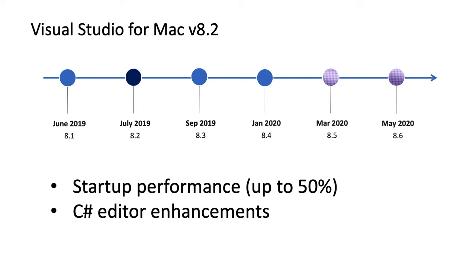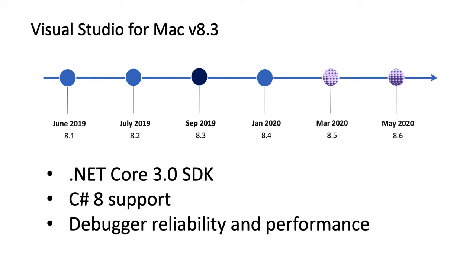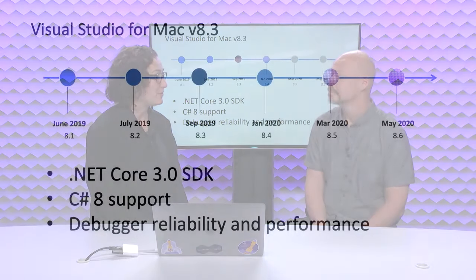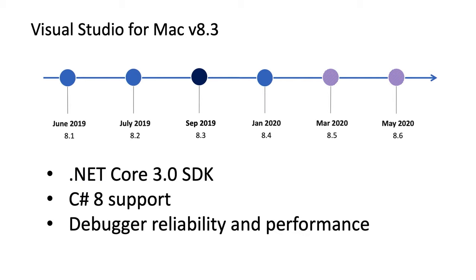Over the following releases with 8.2, we continued to improve the editor and also improved the startup performance of the product so it was much, much faster. Then with 8.3, we introduced support for .NET Core 3.0 and C# 8. With this combined code base it's actually much easier to do that quickly, and it's great for developer teams working on different OSes — Windows etc. — to have that same .NET Core 3.0 and C# 8 support.